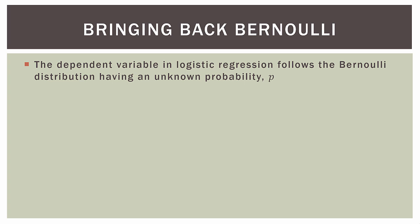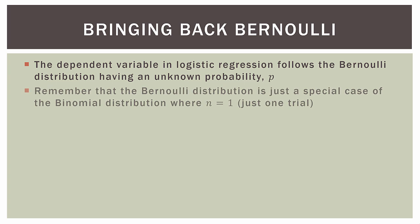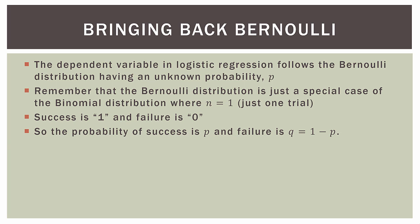The dependent variable in logistic regression — that's either one or zero — follows the Bernoulli distribution, which you may remember from studying the binomial distribution. In the case of logistic regression, the probability p is unknown. The Bernoulli distribution is just a special case of the binomial distribution where n equals one, so just one trial. Success is labeled a one, and failure is labeled zero. The probability of success is p, and failure is q, which equals one minus p.